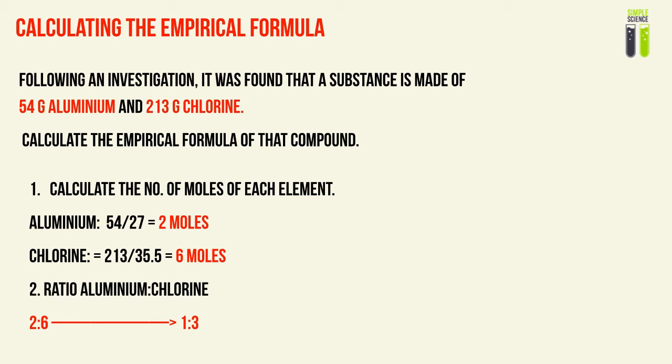First of all, you need to find the number of moles of each element inside our substance. Remember, empirical formula is the ratio between the number of atoms of each respective element compared to each other. So it's very important that we find the number of moles and then compare them. Aluminium would be 54 divided by the molar mass of aluminium, which is 27 — that gives us 2 moles. Chlorine will be 213 divided by 35.5, which is the atomic mass of chlorine, giving us 6. So there's a ratio of aluminium to chlorine of 2 to 6, which can be simplified to 1 to 3.